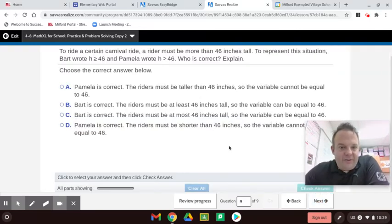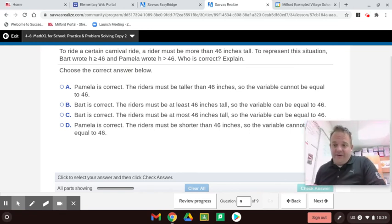To ride a certain carnival ride, a rider must be more than 46 inches tall. So more than, greater than. To represent the situation, Bart wrote H is greater than or equal to 46. And Pamela wrote H is greater than 46. Who is correct? Well, listen guys. You got to be more than 46.